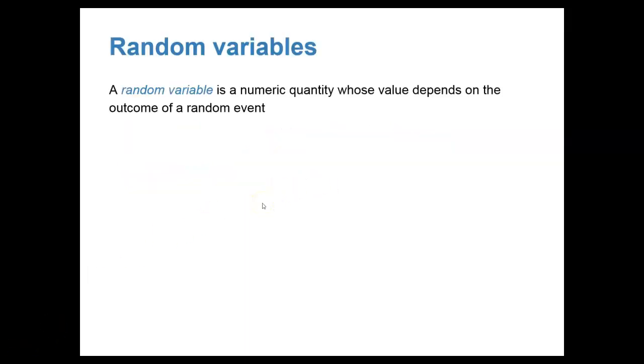So a random variable is a numeric quantity whose value depends on the outcome of a random event. Let's take a look at some common notation that's used. First, we use a capital letter, like capital X, to denote a random variable.